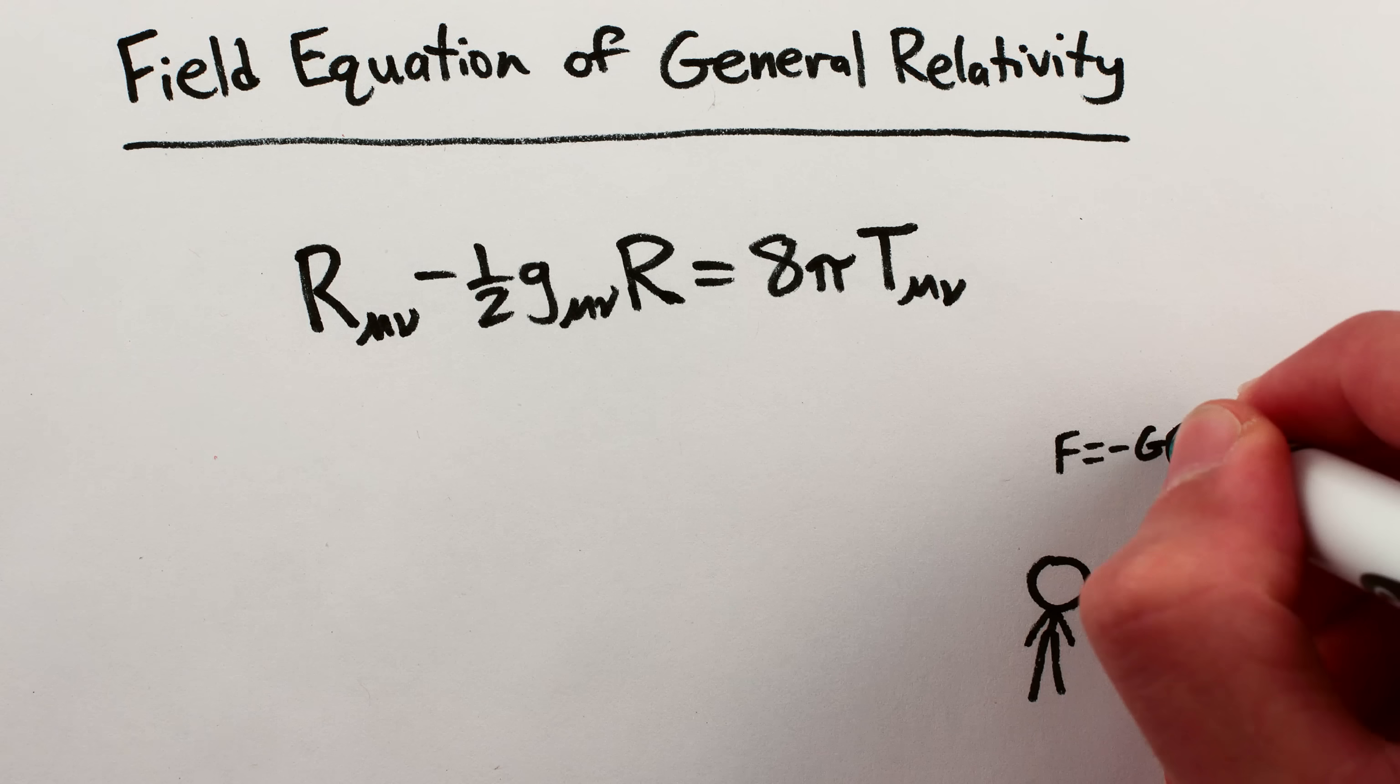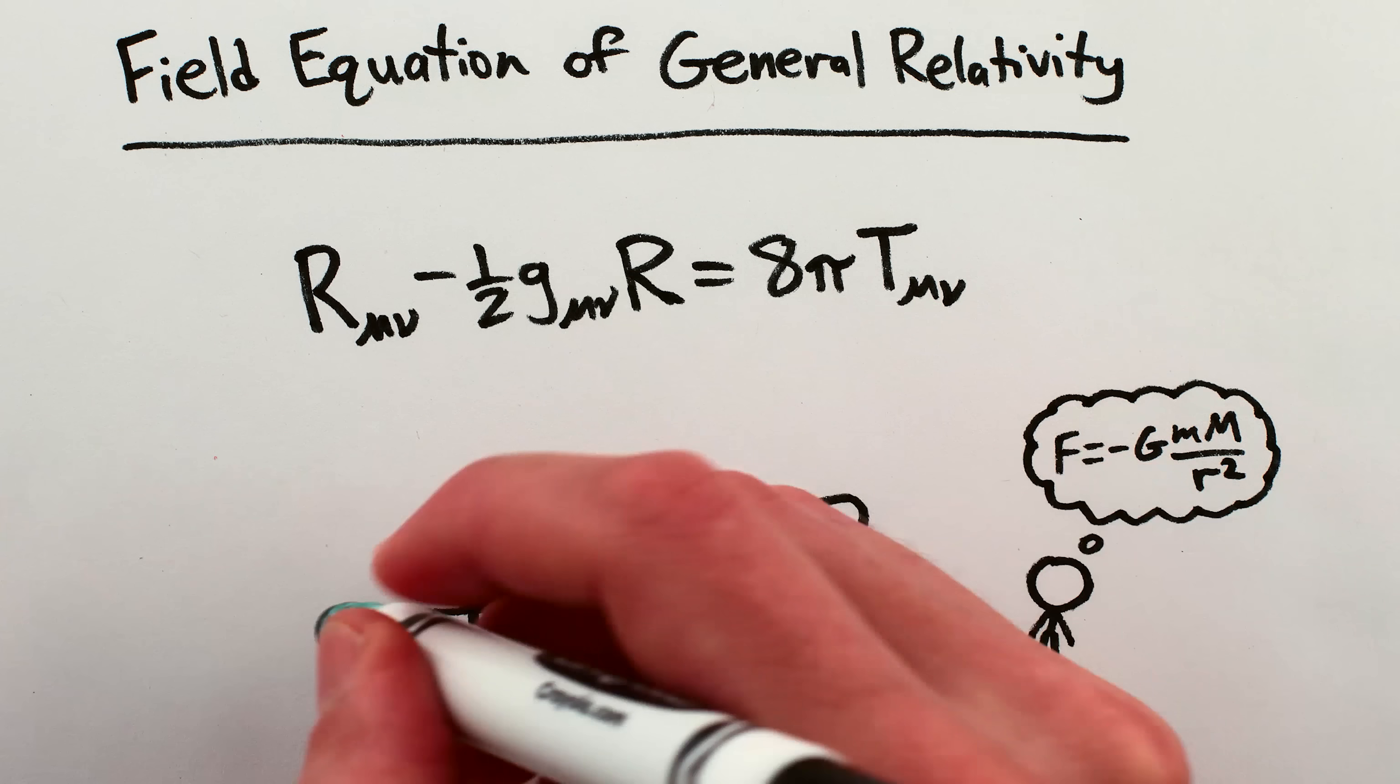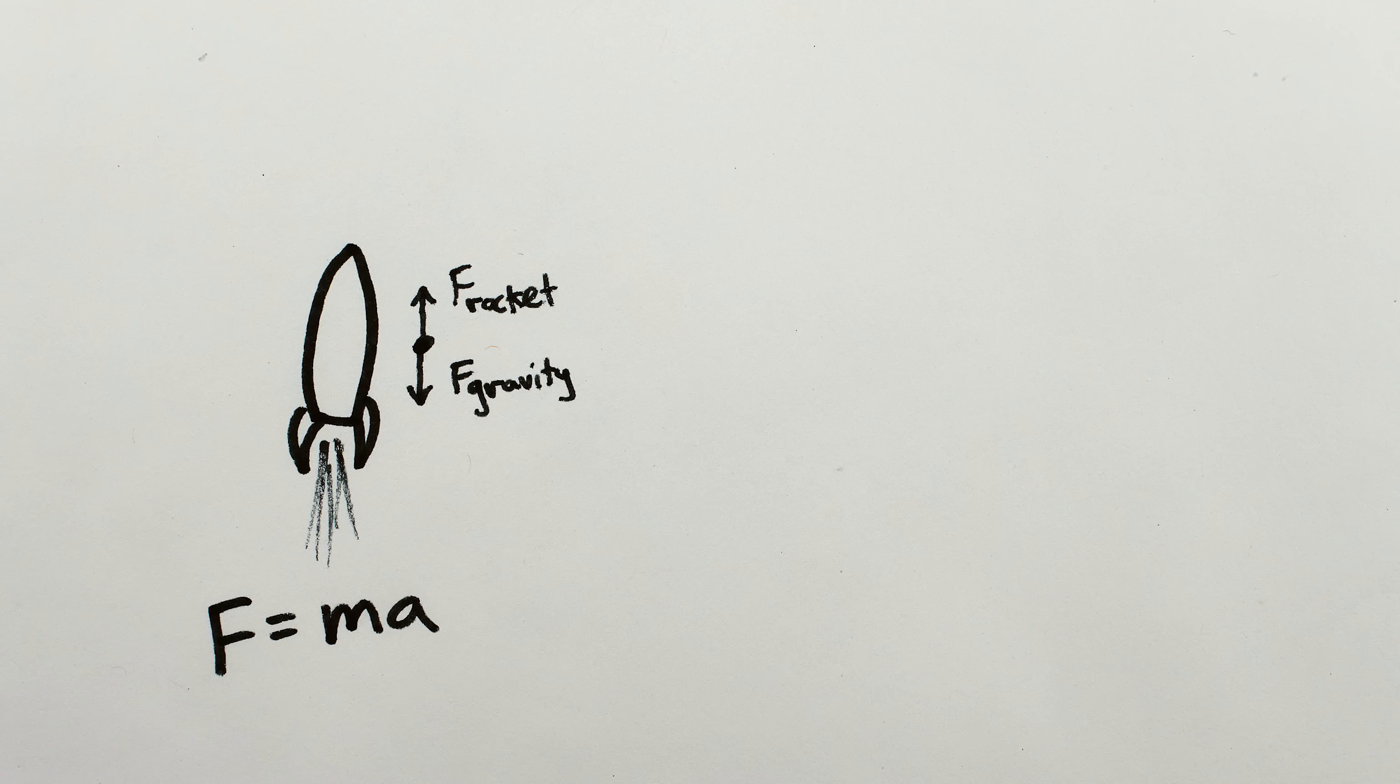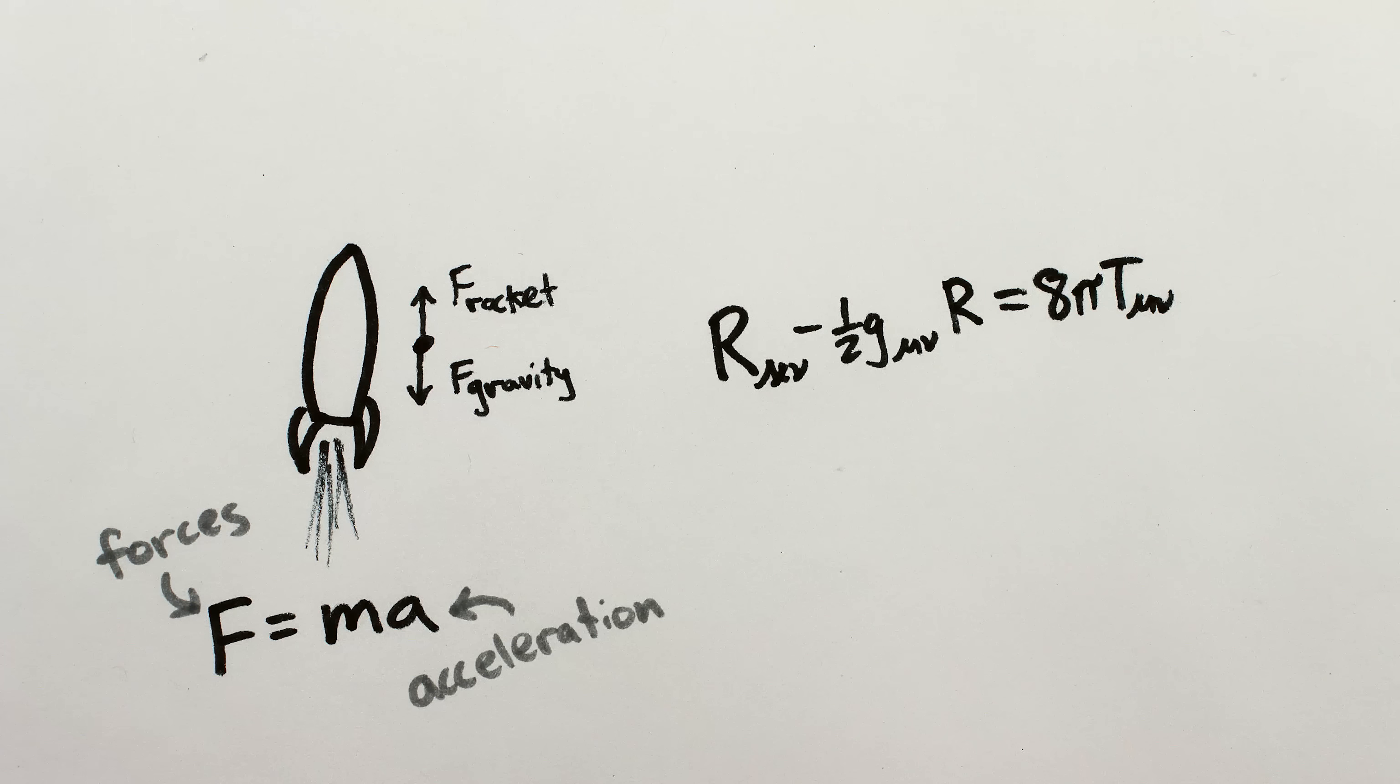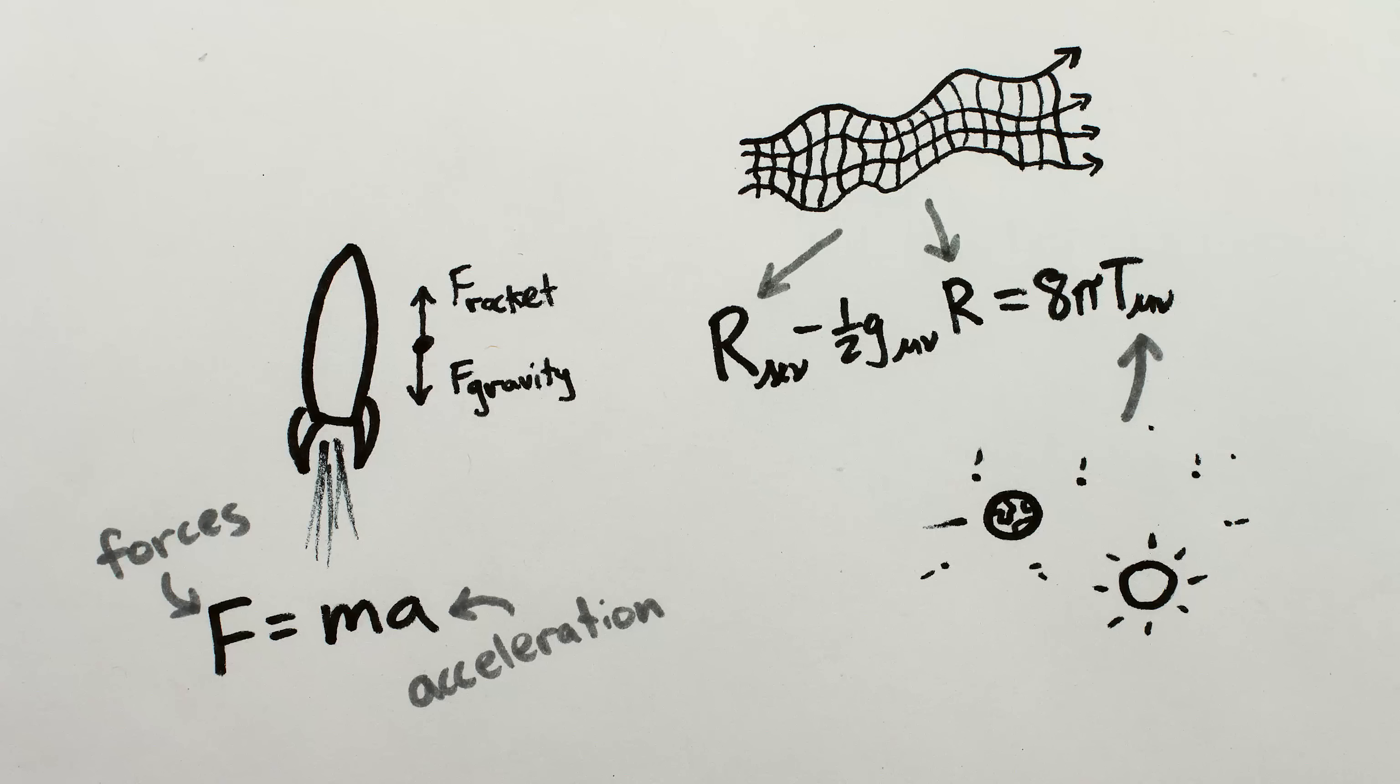This equation replaced the older Newton's law of gravitation, which you may be familiar with, and it remains to this day our best description of how gravity works. Just like how f equals ma is a mathematical description of how the acceleration of an object depends on the forces applied to it, the Einstein equation of general relativity relates the motion of mass and energy, the t on the right, to the curvature of spacetime, the r's on the left.